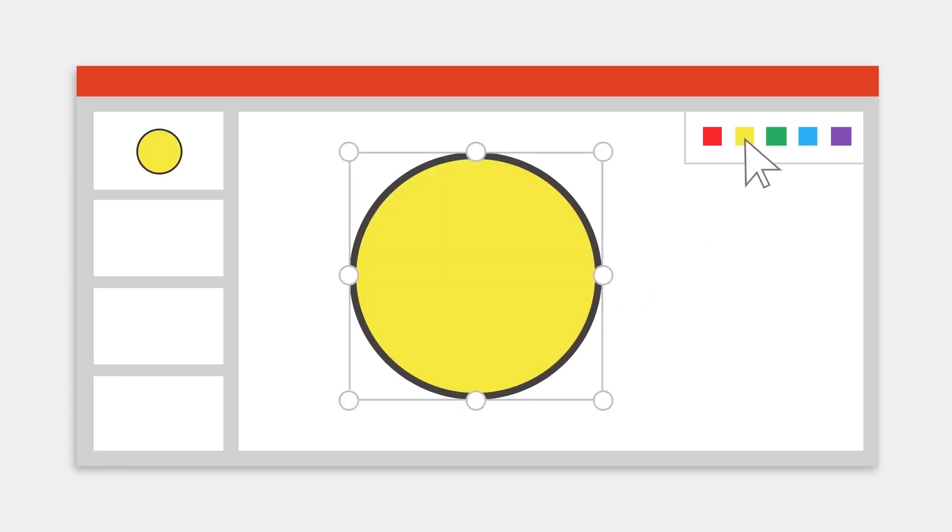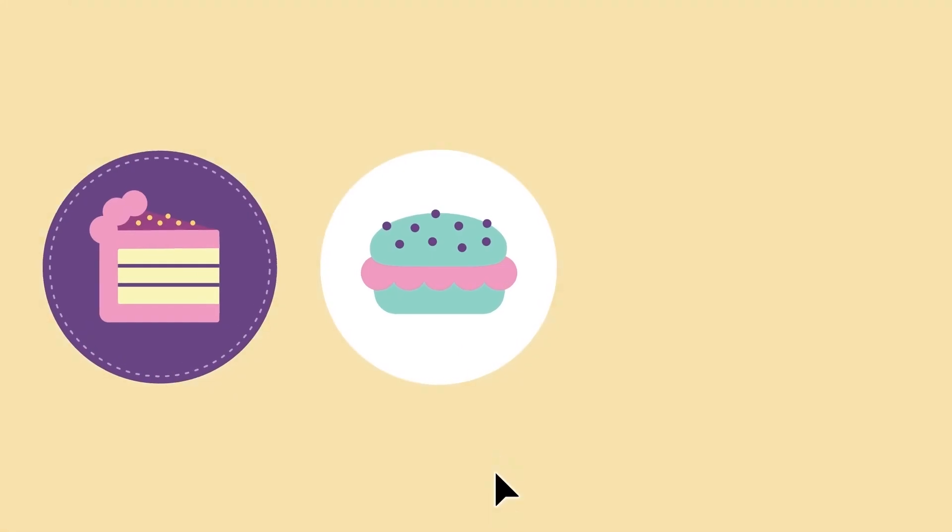Adding color in Illustrator pretty much works the same way as other programs you've worked with. You can select an object and pick a color from your default colors. But what if you need to use a particular color?